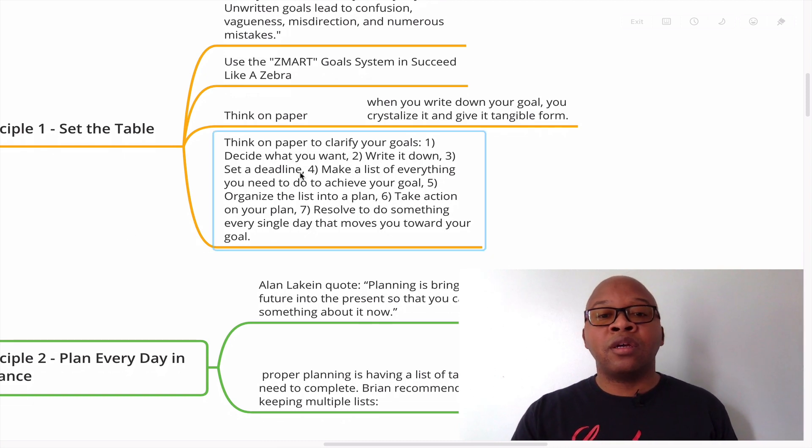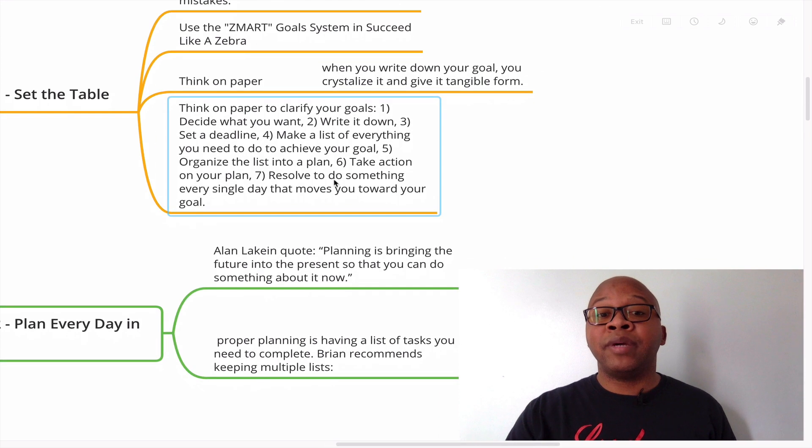Decide what you want. Write it down and set a deadline. Make a list of everything you need to do to achieve your goal. Organize the list into a plan. Take action on your plan. Resolve to do something every single day that moves you toward your goal. The key is to make sure that you're doing something every single day that's going to move you closer to your goal.